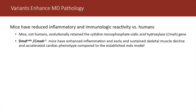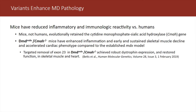It's established that mice have reduced inflammatory and immunologic reactivity versus humans in general. Work at Children's Nationwide by Paul Martin's group has shown that the CMA gene — evolutionarily retained in the mouse — offers some protection from an enhanced inflammatory background. If this gene is deleted on the MDX background, these mice have enhanced inflammation, early and sustained skeletal muscle decline, and accelerated cardiac phenotype. This model has been leveraged in genetic treatment studies. Mouse strains also differ in their inflammatory background.